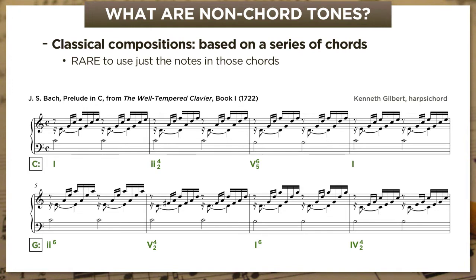Now there's a name for this kind of piece: it's called a Figuration Prelude. This is a baroque genre in which a composer takes some chord progression and brings it to life with all kinds of bustling rhythms and arpeggios—but not usually any overtly lyrical melody. This is not a piece you walk away singing. But even in that genre, it's remarkable that Bach's piece uses only chord tones.